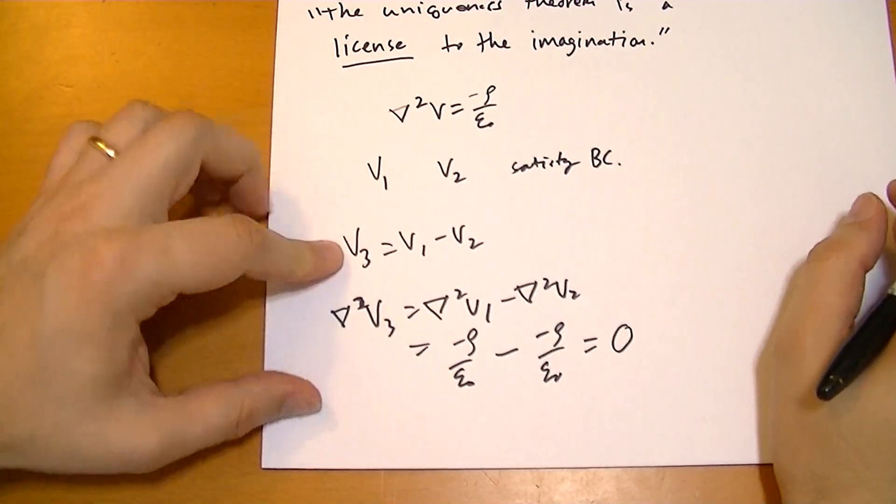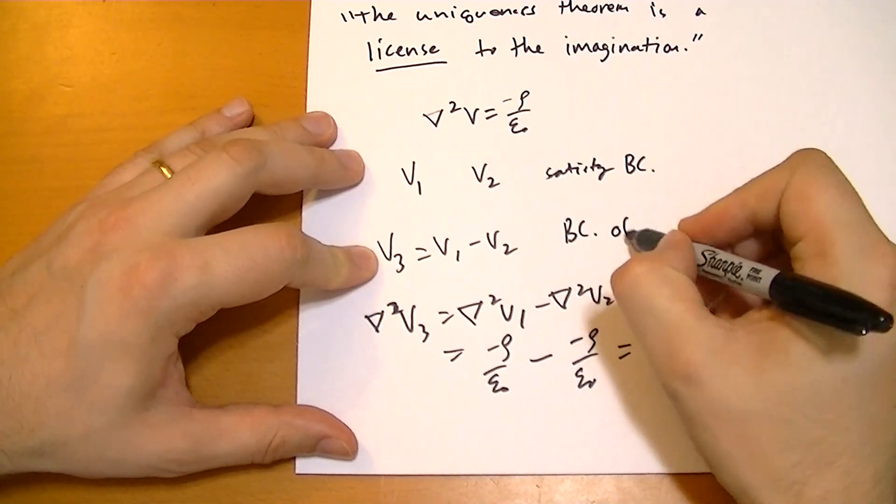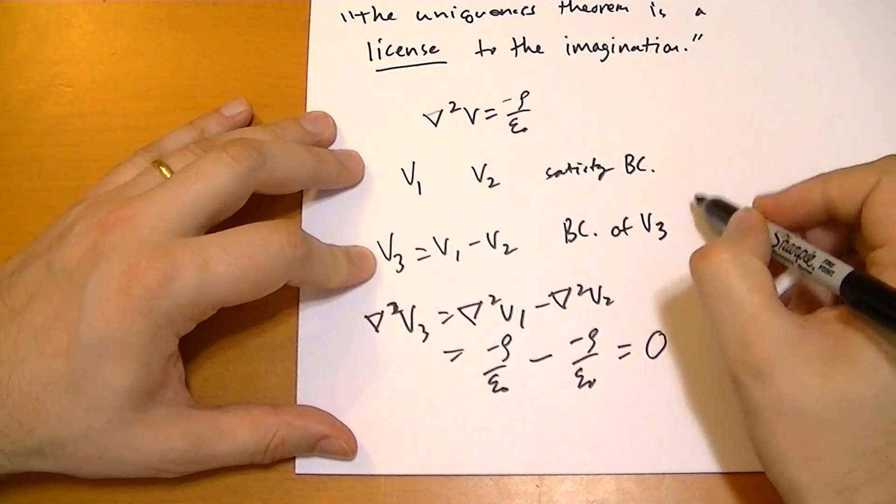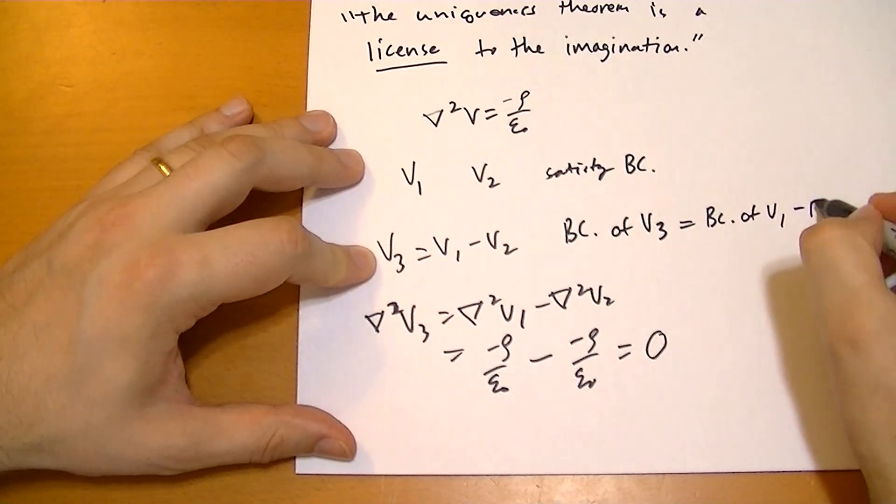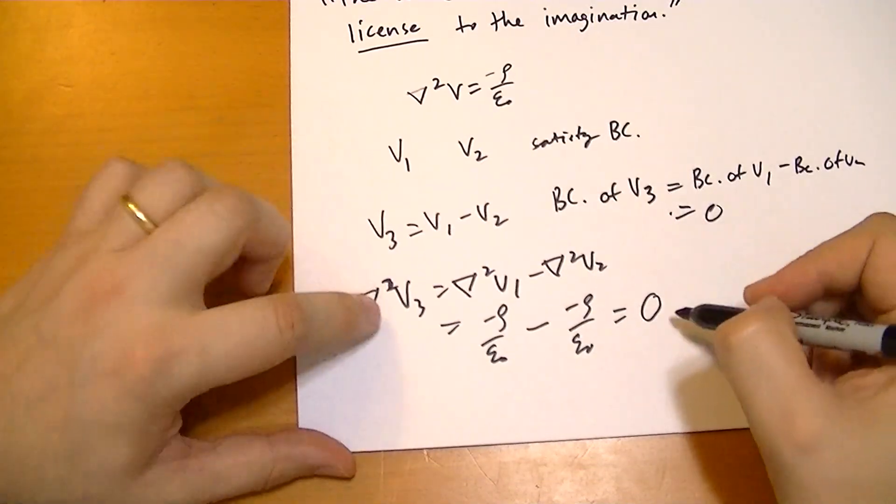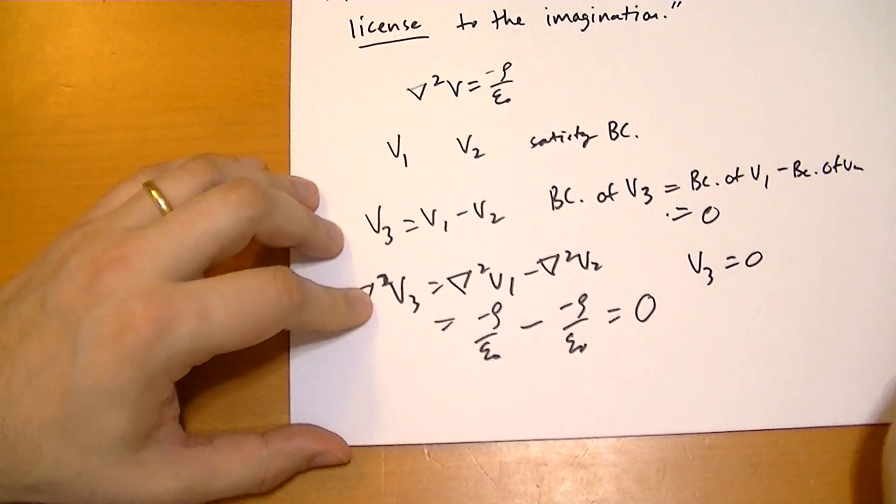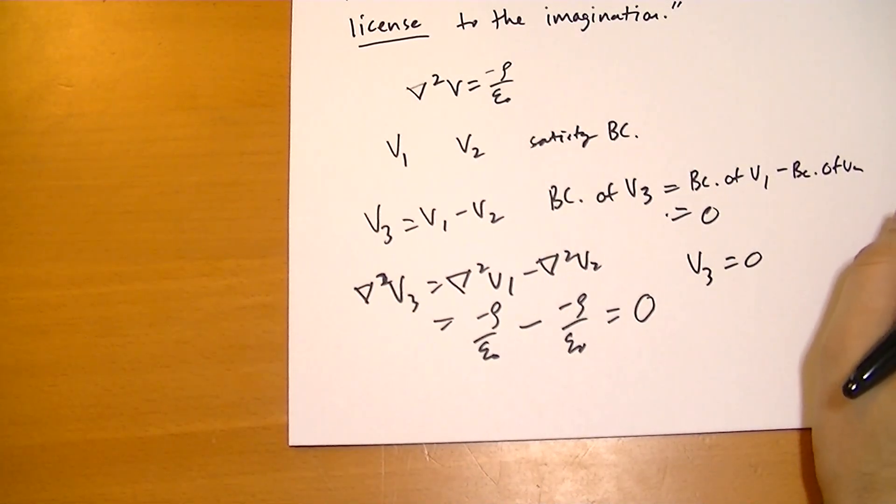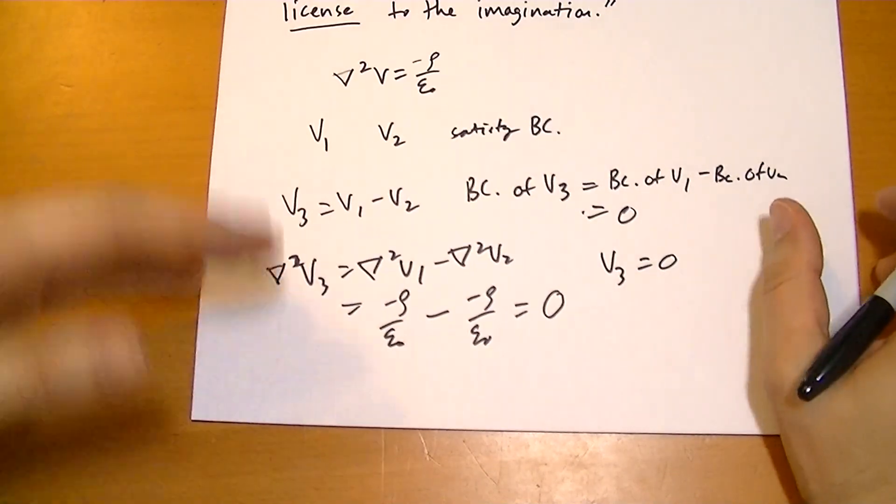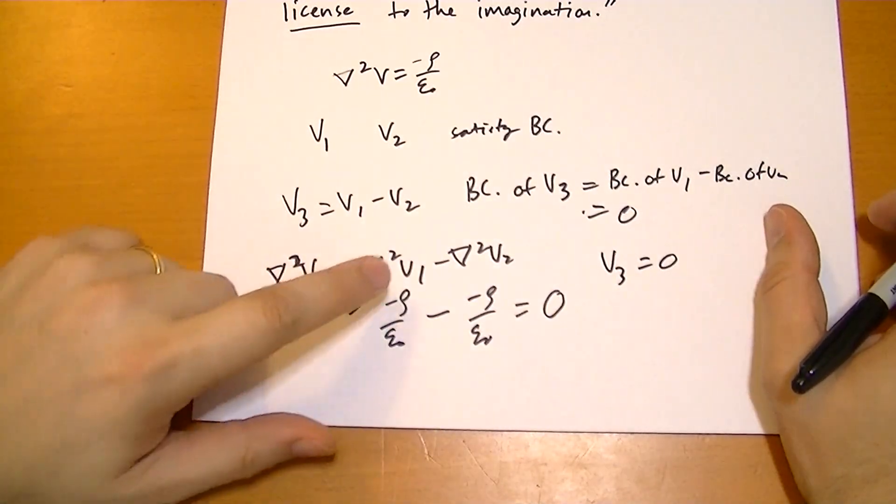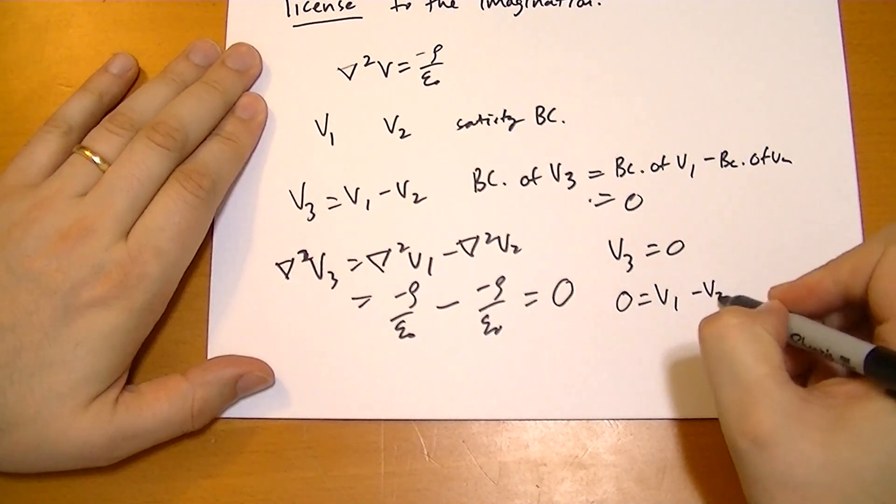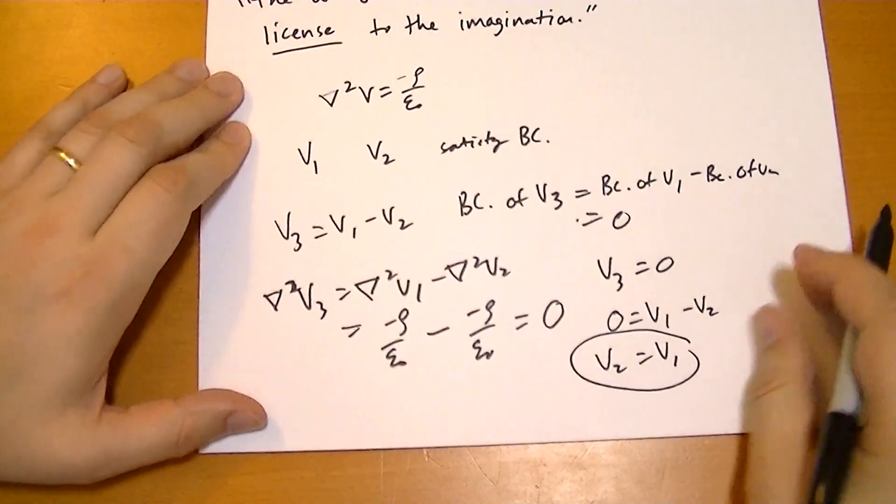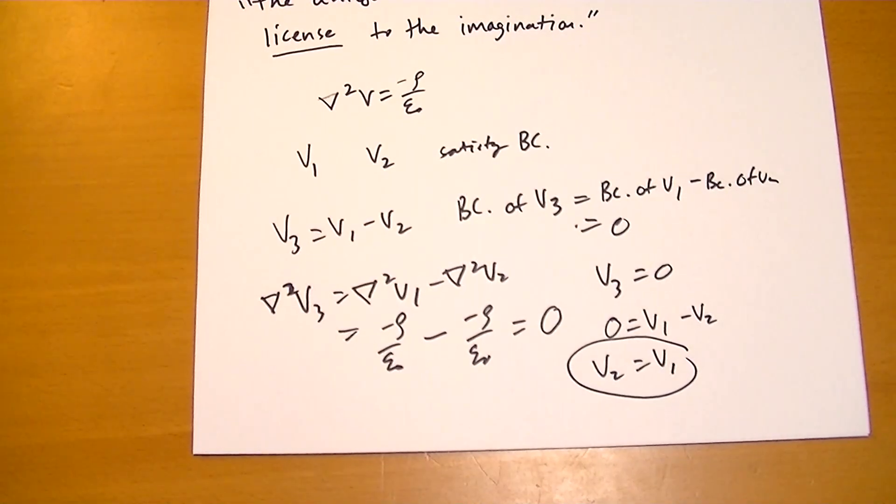What's the boundary conditions of V3? The boundary conditions equal the boundary conditions of V1 minus the boundary conditions of V2, so it's zero. Since it's zero and it follows Laplace's equation, therefore V3 must equal zero everywhere. That's just following the first uniqueness theorem. That means that V1 and V2, so that means zero equals V1 minus V2, or V2 equals V1, even for Poisson's equation. So this works also for Poisson's equation.